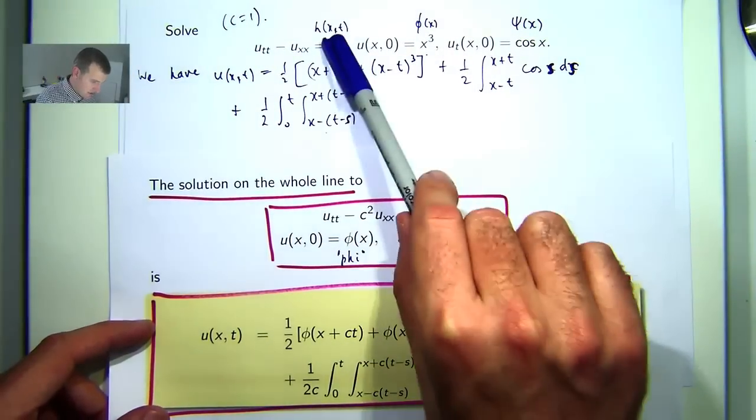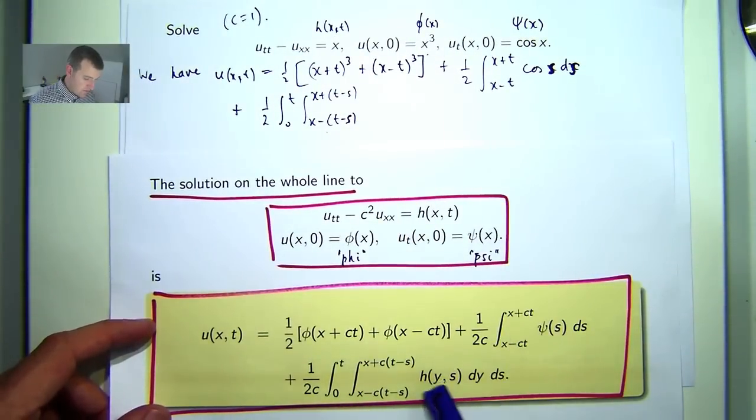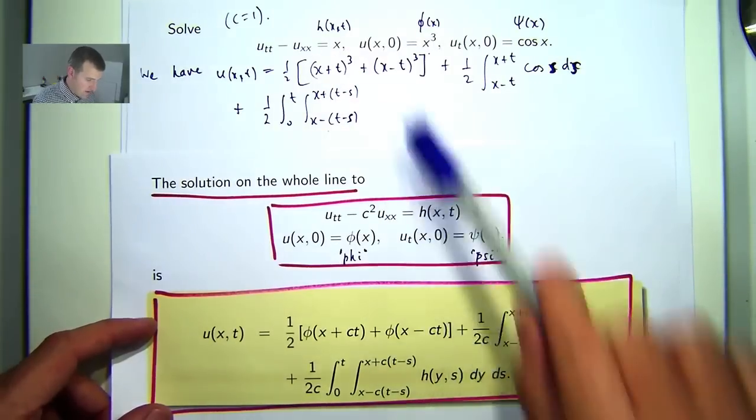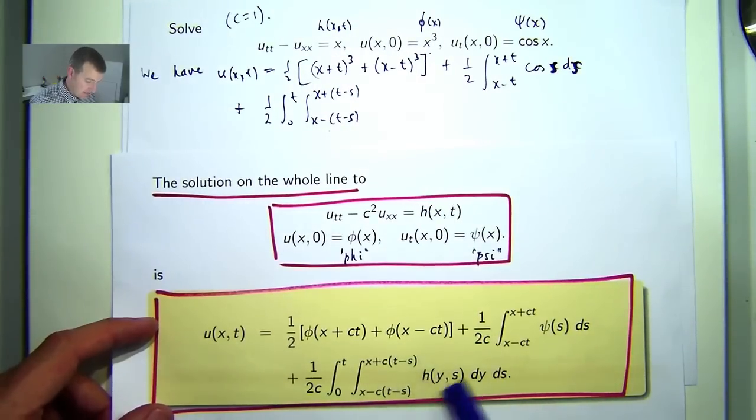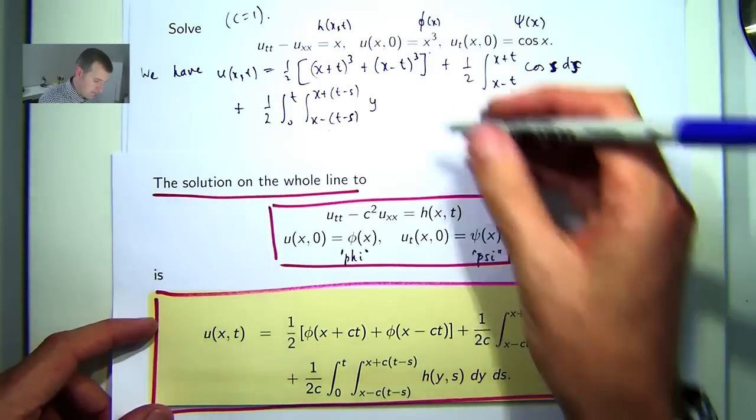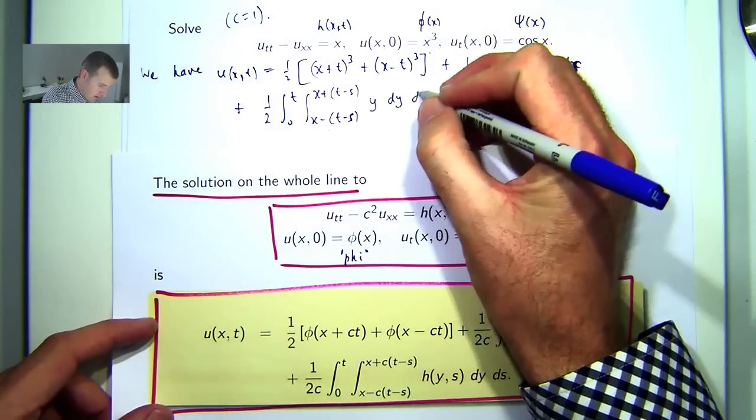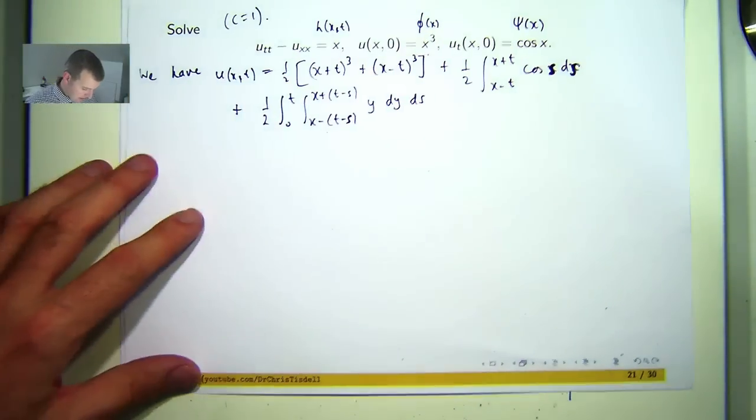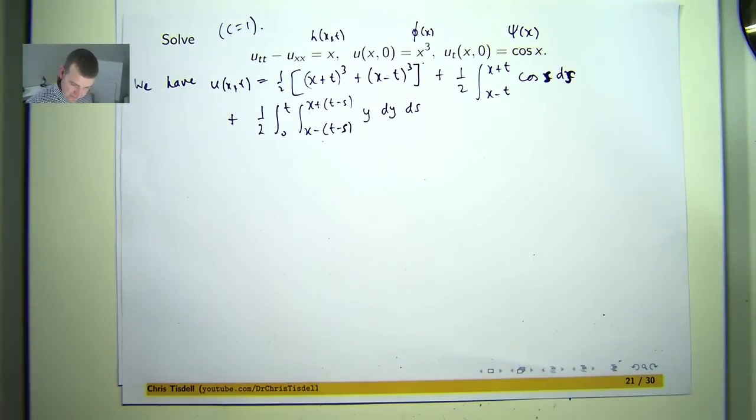So for this term we're going to have the following. Now, h is just a function of x here. The dummy variable is going to be y for the inside integral and s for the outside integral. Now, h is just a function of one variable, so we don't have to worry about the s inside here. So we'll just replace x with y. Okay, so we've set everything up. Let's see if we can actually evaluate it now.